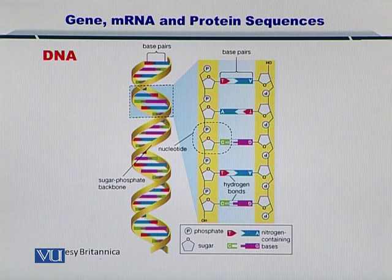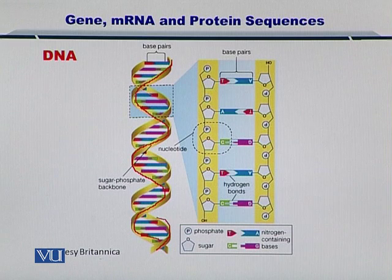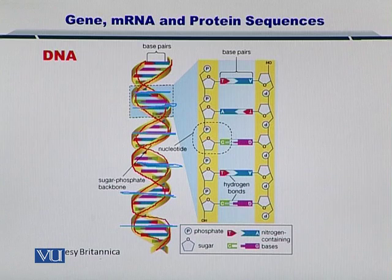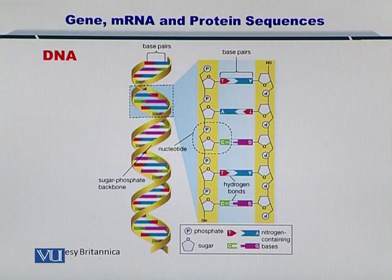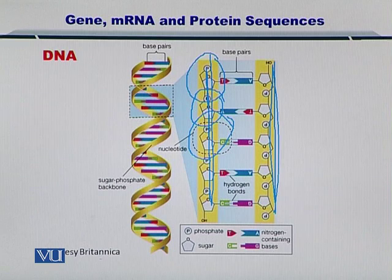If you look at the DNA, then two things are obvious. The first thing is its double helical structure — that is, one strand of nucleotides running in parallel to a second strand. Secondly, these two strands are held together by different base pairs as indicated by the colored lines. This resembles a phosphate and a sugar repeating unit on each strand in the anti-parallel direction.